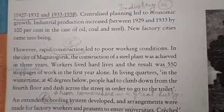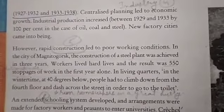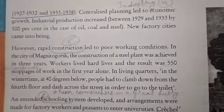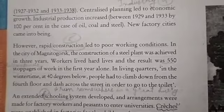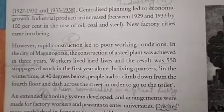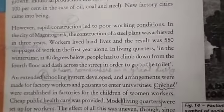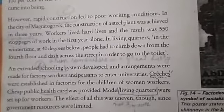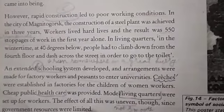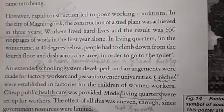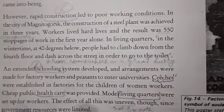There was a lot of economic growth between 1929 and 1933, reaching 100% of production targets. Oil, coal, and steel production increased. New factories were started. However, despite rapid construction, living conditions and working conditions were poor.